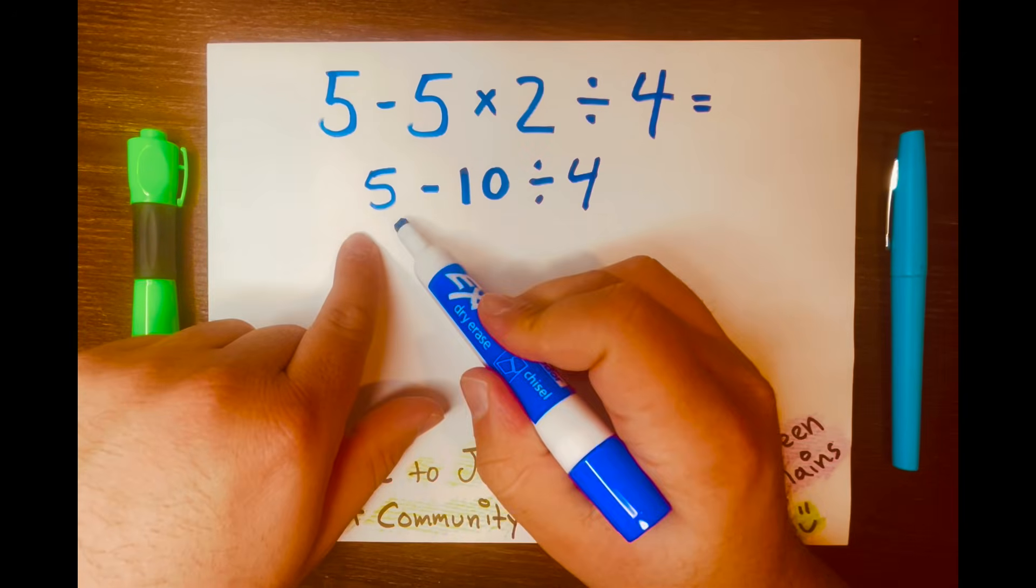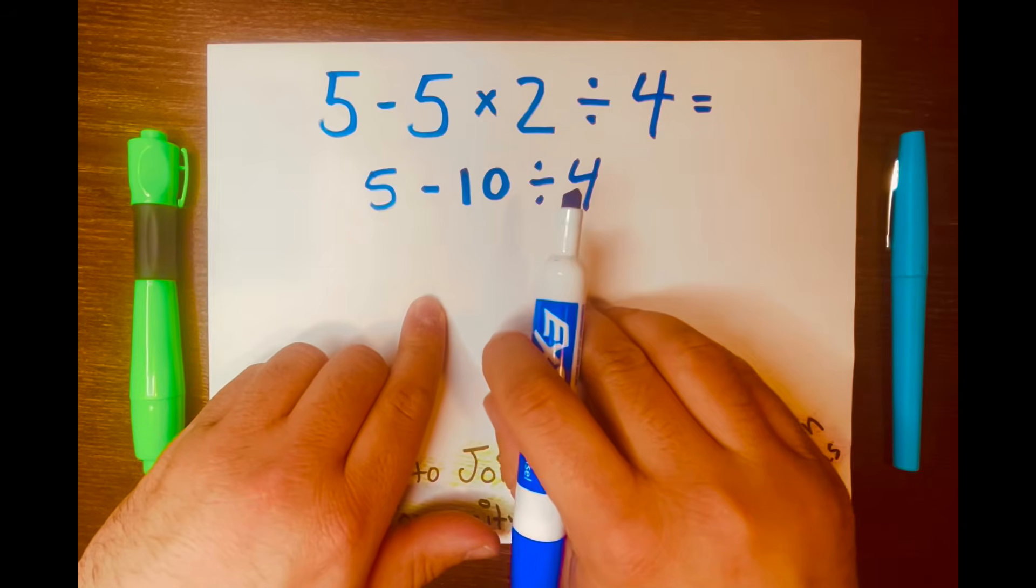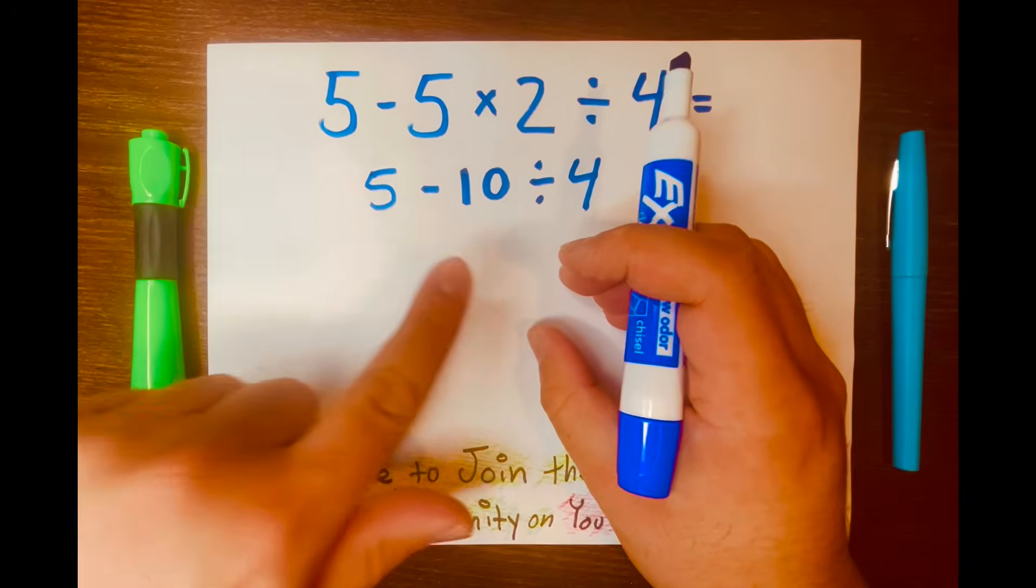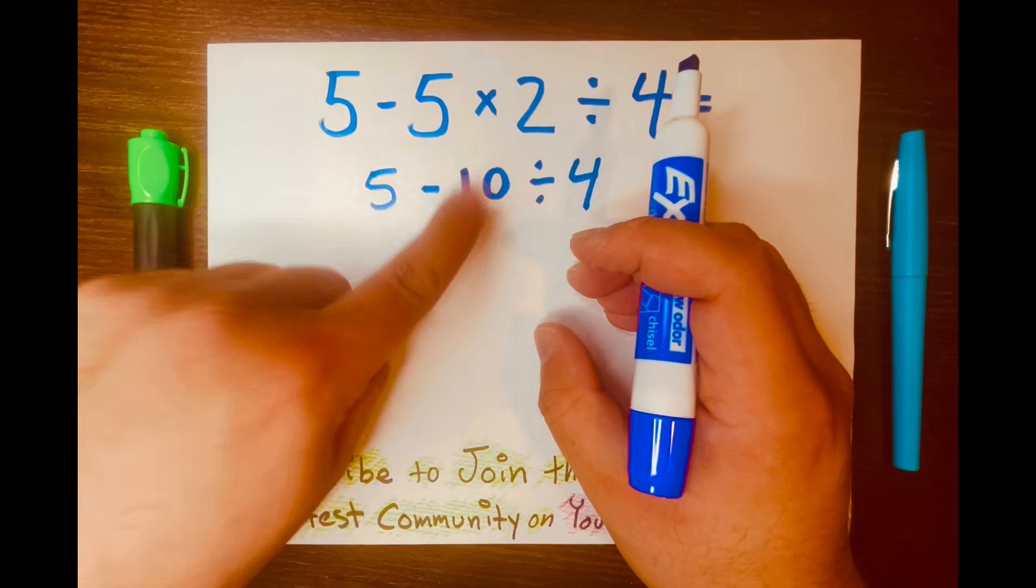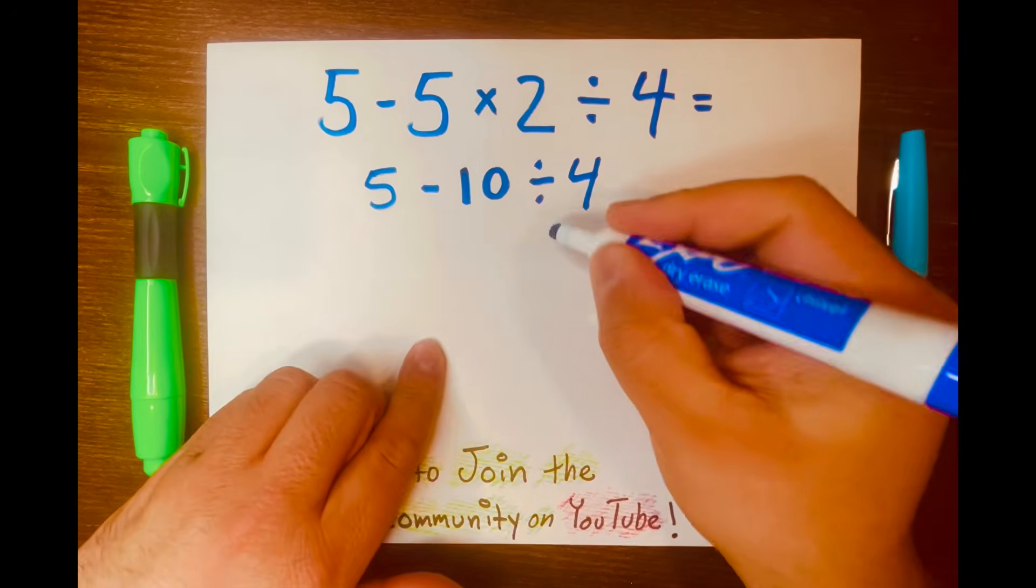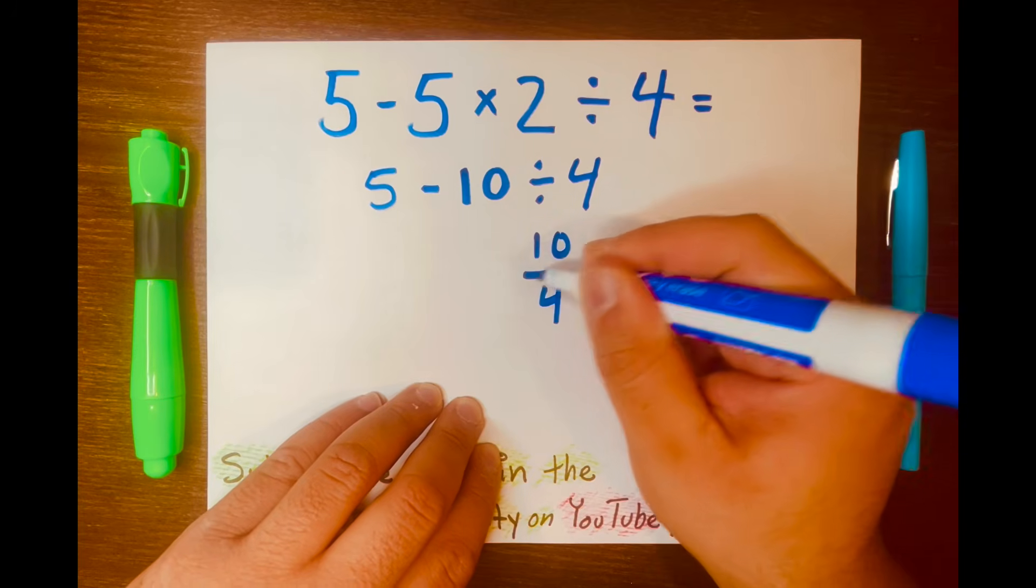Now we're looking at 5 minus 10 divided by 4. And PEMDAS is telling me that 10 divided by 4 goes first, not 5 minus 10. So let's write the 10 divided by 4 in a fraction form to make the math easy. So I'll write 10 over 4.